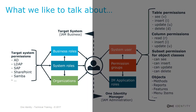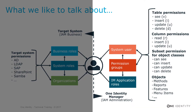Working with an identity management system like Identity Manager, we typically deal with target system permissions and resources. We handle them in business roles or system roles and handle them with the help of organizations. At the end, what we do in an identity management system is assign all of these entitlements to our identities. In this video series, I don't want to talk about handling target system permissions. I want to talk about all the permissions we have in Identity Manager itself — system users, permission groups, application roles, and a lot of other permissions we can use to manage what you are allowed to do in Identity Manager.